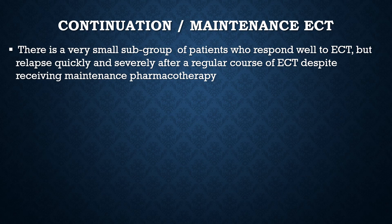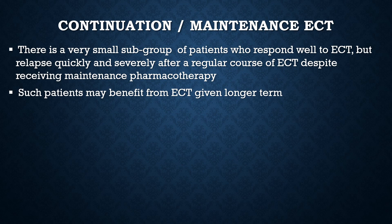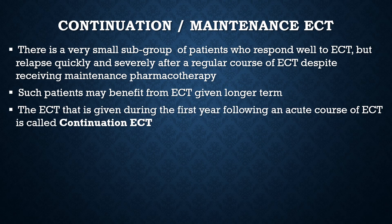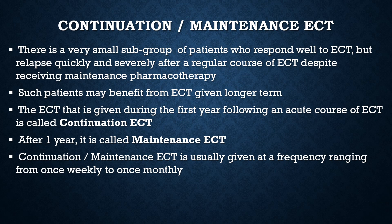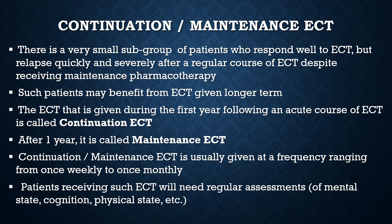A very small subgroup of patients respond well to ECT but relapse quickly and severely after a regular course, despite receiving maintenance pharmacotherapy and/or psychotherapy. Such patients may benefit from longer-term ECT. ECT given during the first year following an acute course is called continuation ECT; after one year it is called maintenance ECT. This is usually given at a frequency ranging from once weekly to once monthly. Patients receiving long-term ECT need regular assessments of their mental health, cognitive state, and physical health.